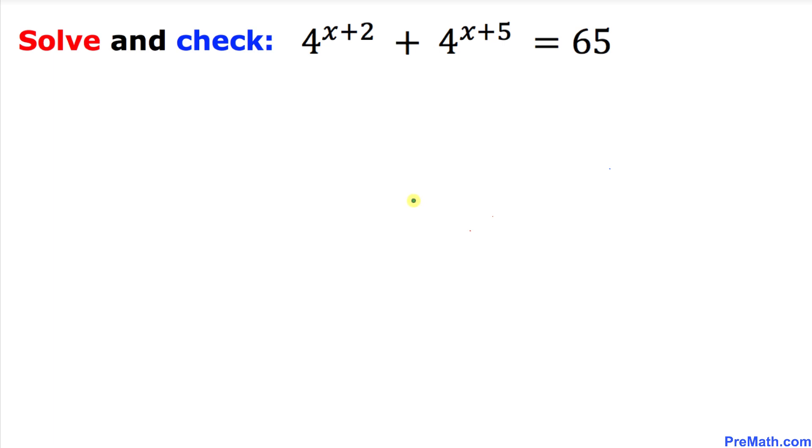Welcome to PreMath. In this video tutorial we are going to solve and also check this given exponential equation: 4^(x+2) + 4^(x+5) = 65.